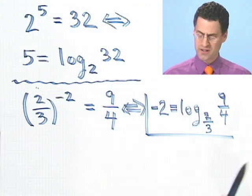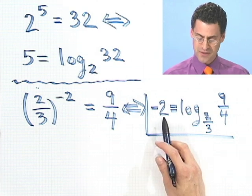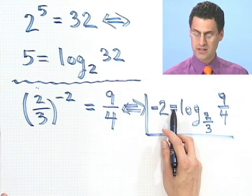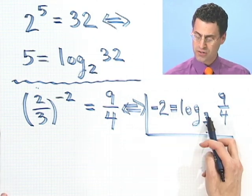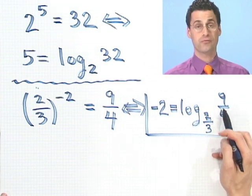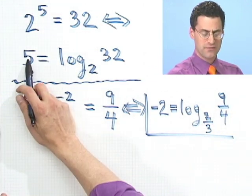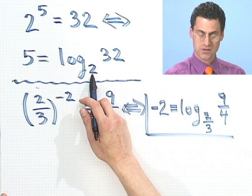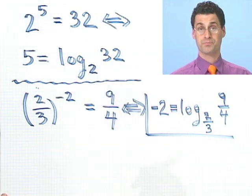That's how you read that, by the way, in case you're reading to a nephew or something. You read this as negative 2 equals log base 2 thirds of 9 fourths. That's how you'd read this. This you'd say 5 equals log base 2 of 32. That's how you read it.